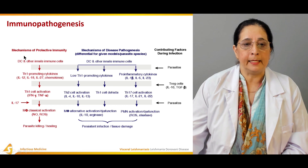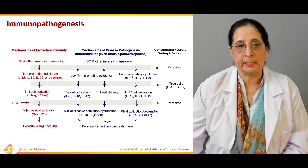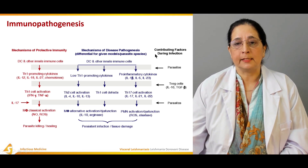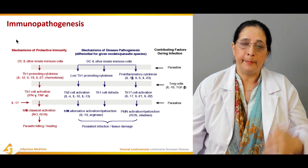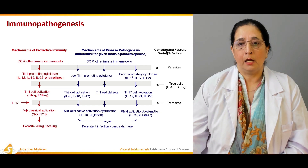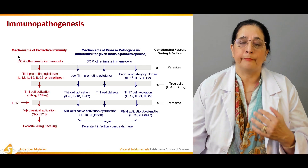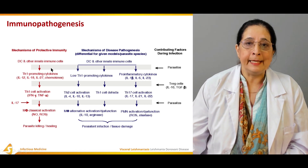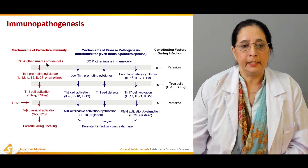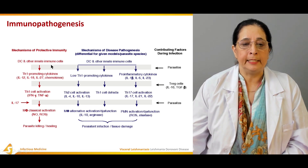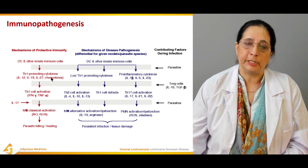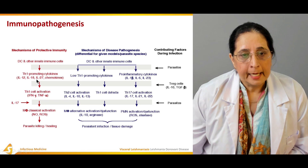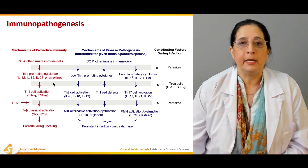Immunopathogenesis can be broadly divided into three spectrums: mechanism of protective immunity, mechanism of disease pathogenesis, and contributing factors during infection. In the protective immunity mechanism, dendritic cells and other innate immune cells lead to TH1-promoting cytokines, including interleukin-12, interleukin-18, interleukin-27, and some chemokines.